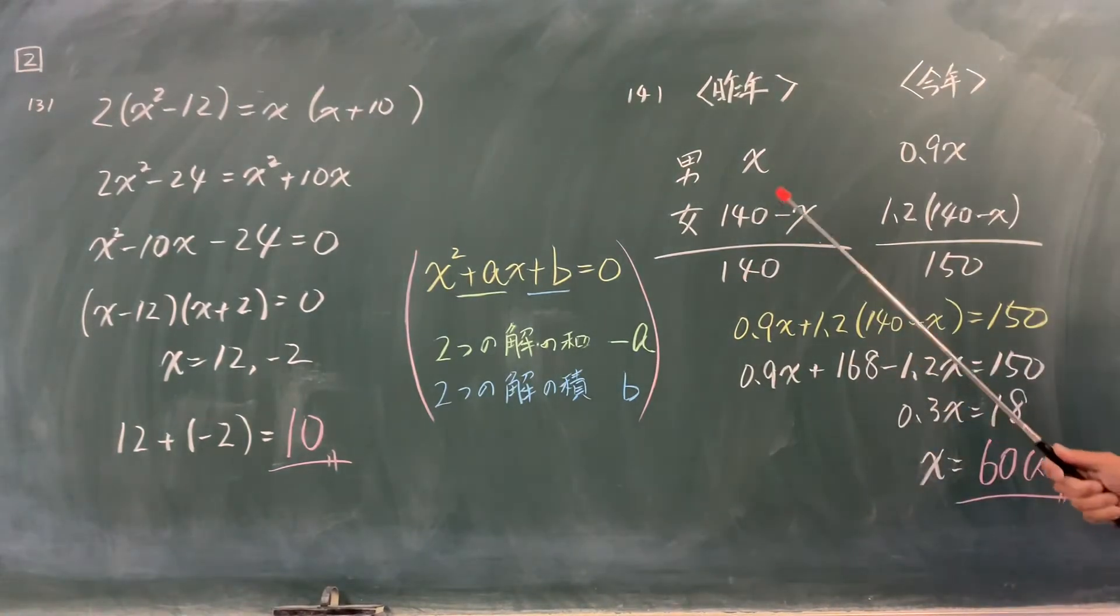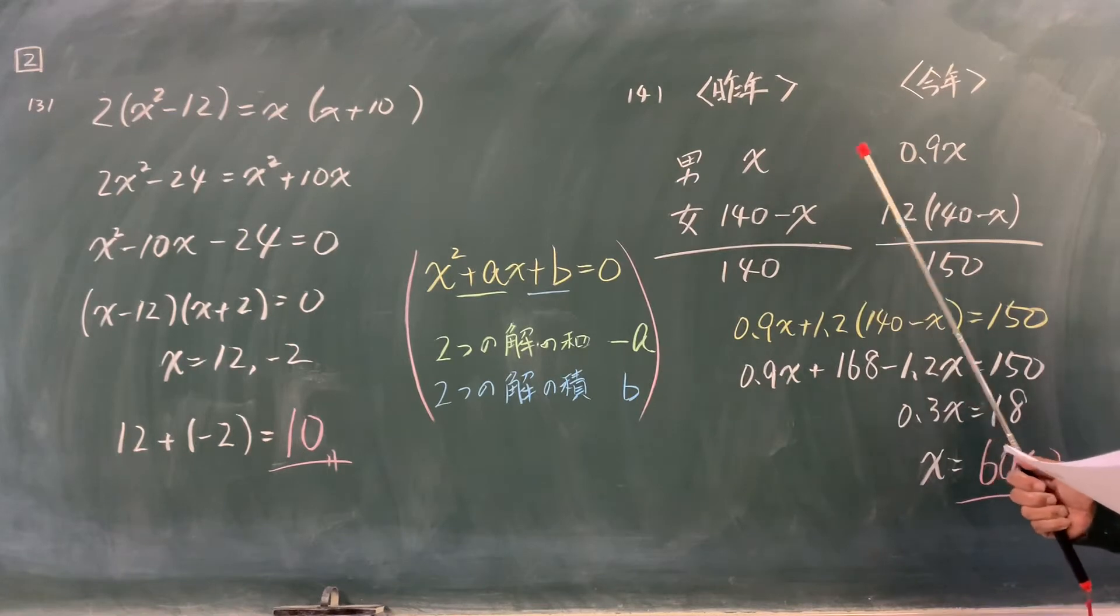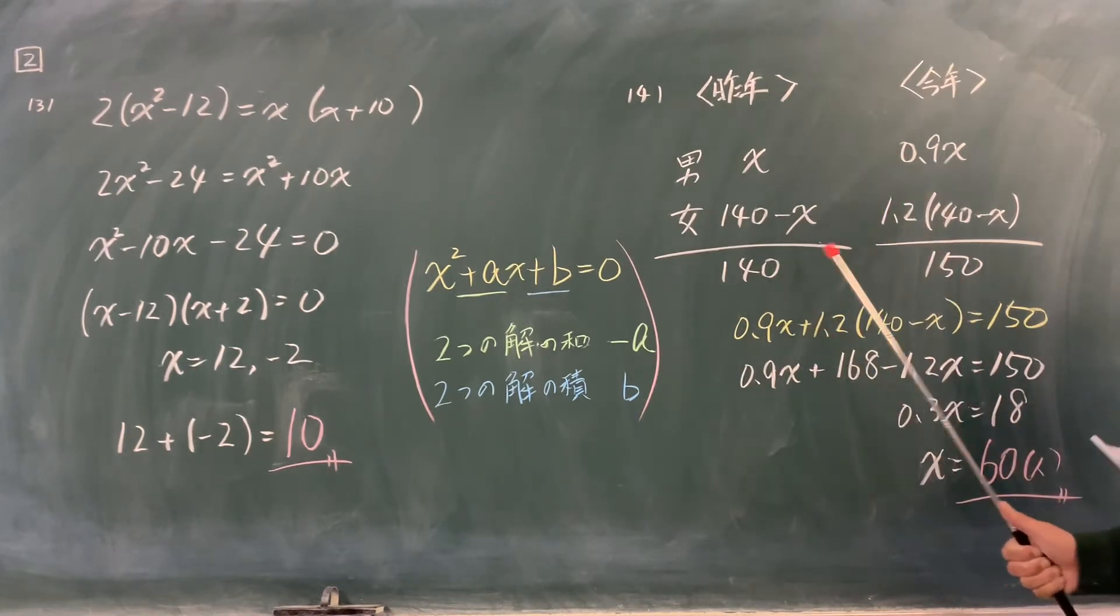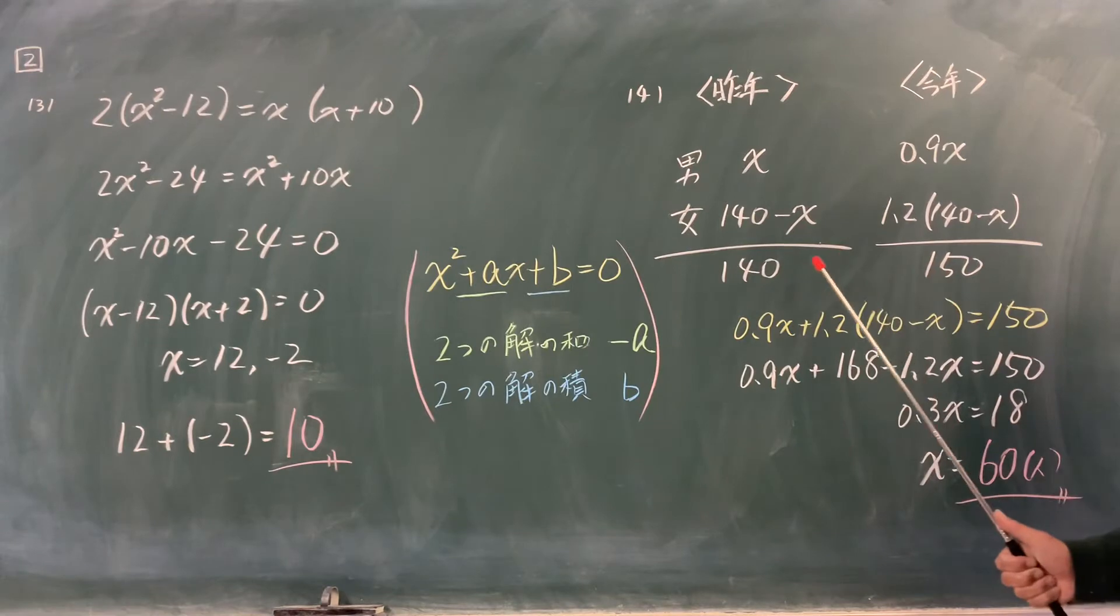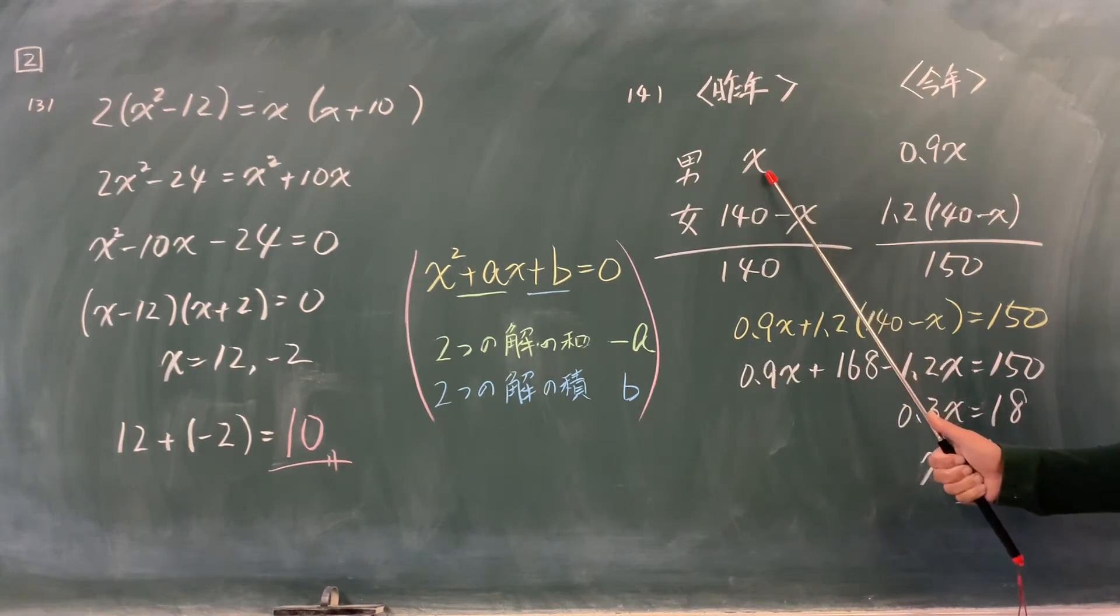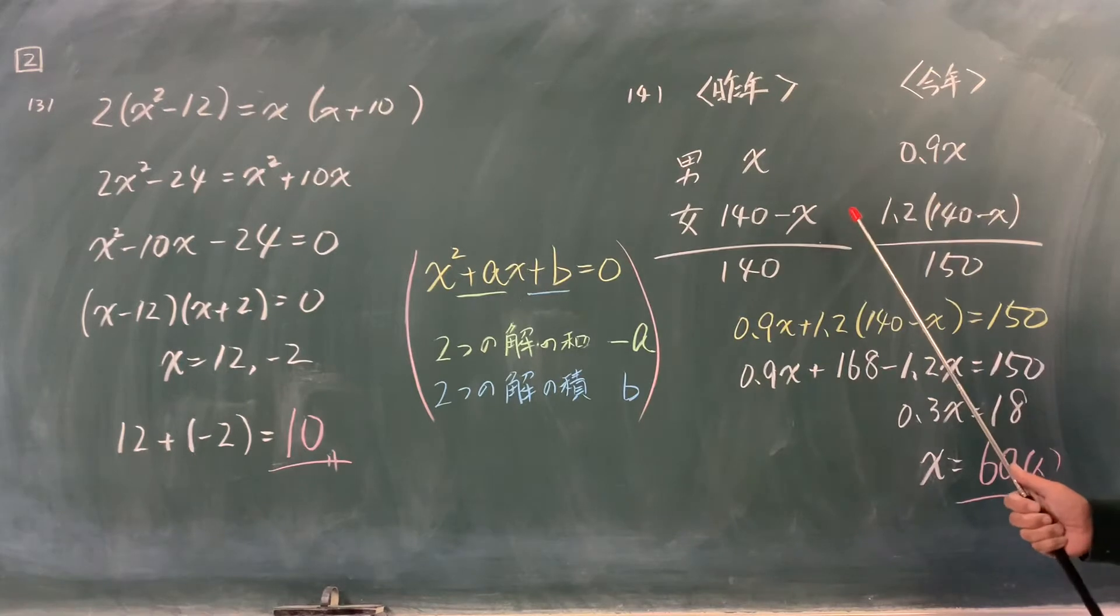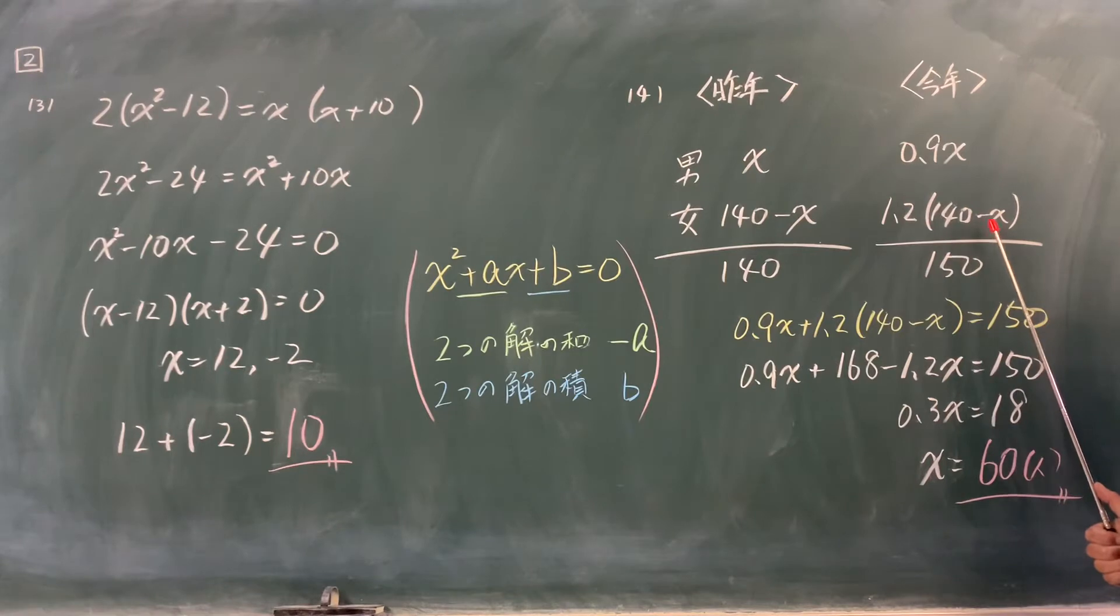次、昨年の男子がx人とおきます。今年は150人ですが昨年より10人増えて150人ということは昨年は140人。したがって昨年の女子は140マイナスxとおくことができます。男子は10%減った、つまり90%になったということで0.9x。女子は20%増えた、1.2倍になったということで1.2かっこ140マイナスx、合わせて150という方程式で、展開して整理して答え60人と出てきます。